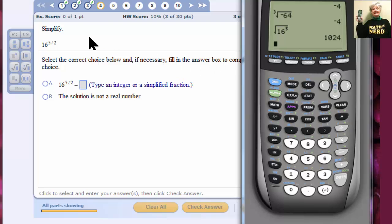However, let's write in the calculator exactly what you see here. Because we're supposed to write an answer. It says type an integer or a simplified fraction. That means actually find the answer and type the answer. So, we're going to have 16 carat. Use parentheses if you need them. 5 divided by 2. And I'm going to hit the right arrow key. That just tells the calculator I'm done. And I'm going to hit enter.